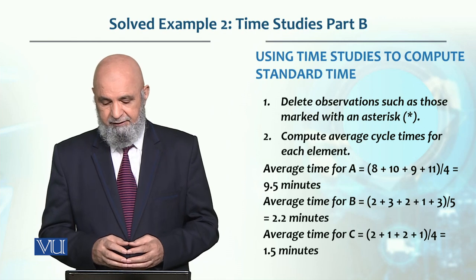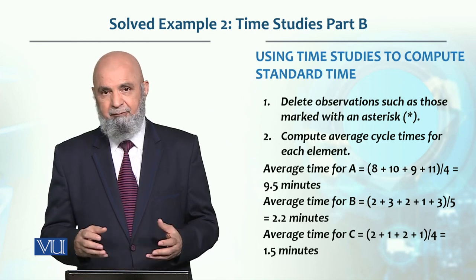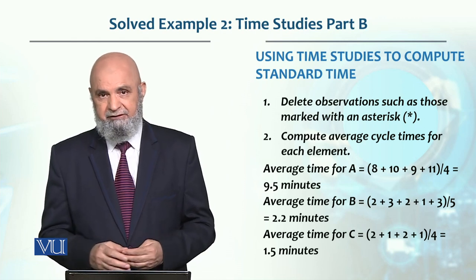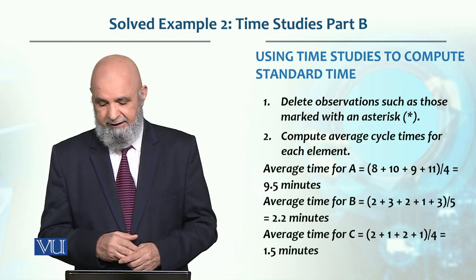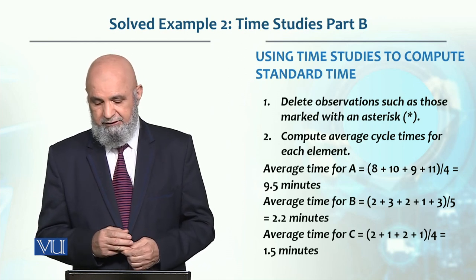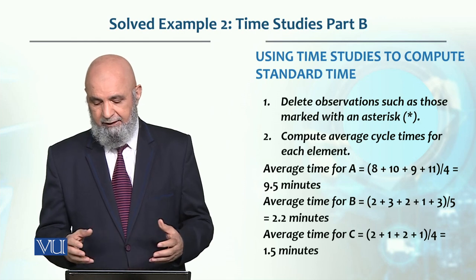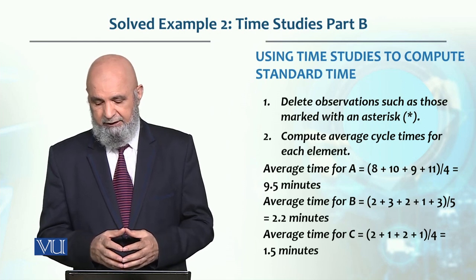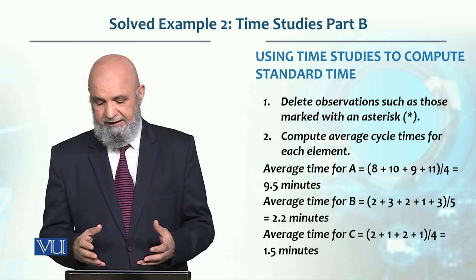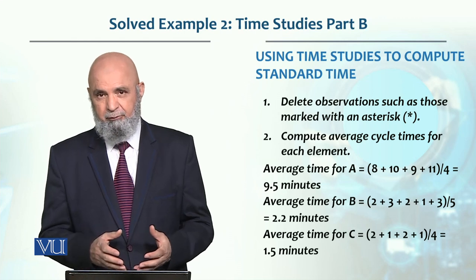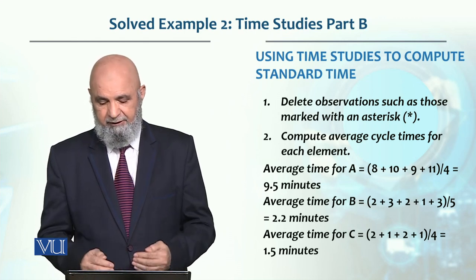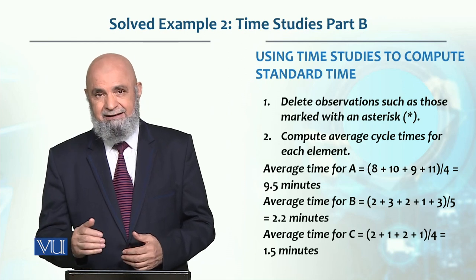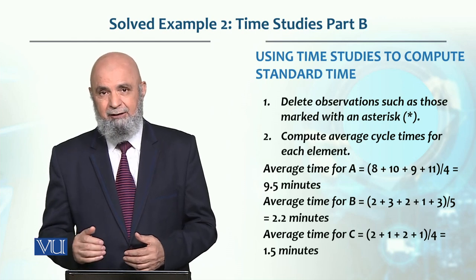For average time of work element C, we have 4 observations. One value of 5 minutes was eliminated as an outlier. The remaining values are 2, 1, 2, 1. Summing gives 6, divided by 4 equals 1.5 minutes. So we now have the average observed time for all three elements.